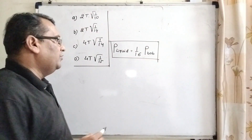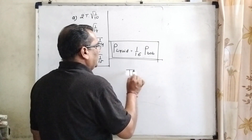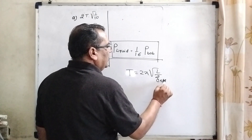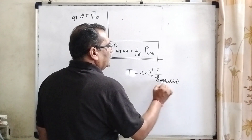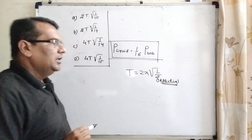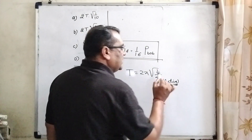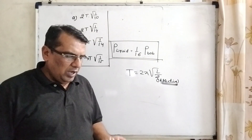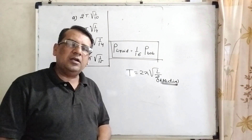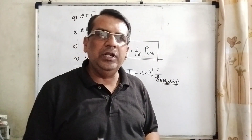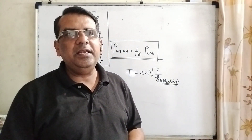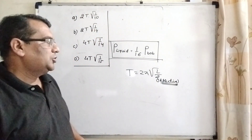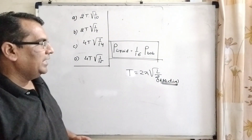In this question we are using two concepts. First is the formula for simple pendulum: T = 2π√(L/G), where G is effective — meaning G is relatively changed, so it can be written as G_effective. The second concept is Archimedes' principle. Archimedes' principle states that any object fully or partially immersed in a liquid has its weight reduced by the weight of the liquid displaced by it.